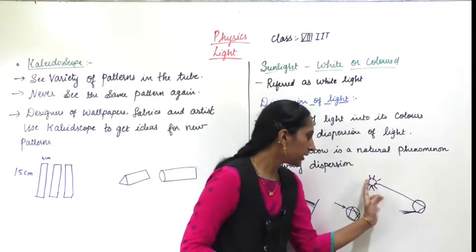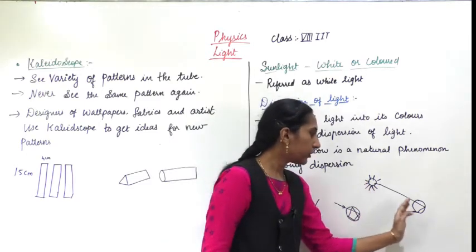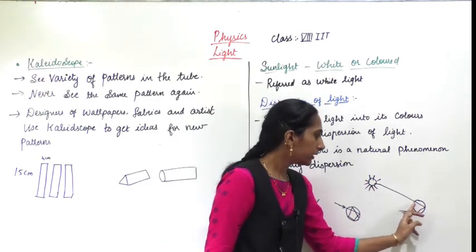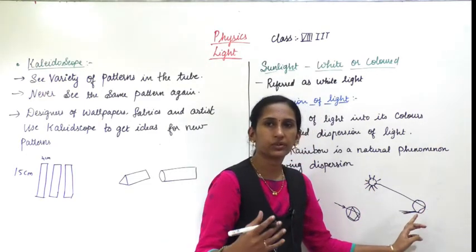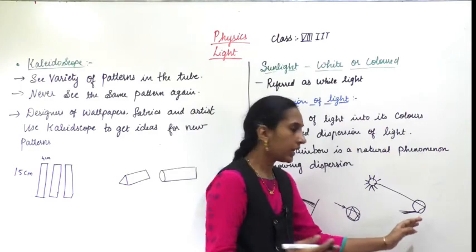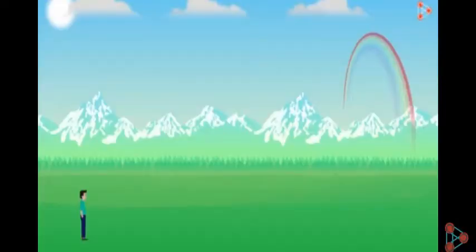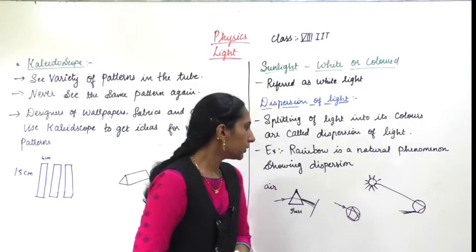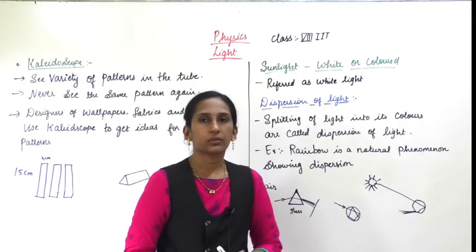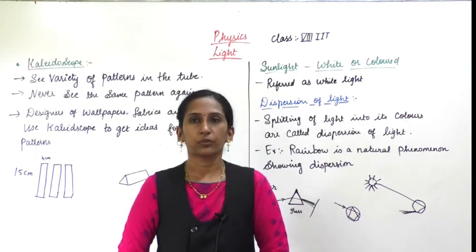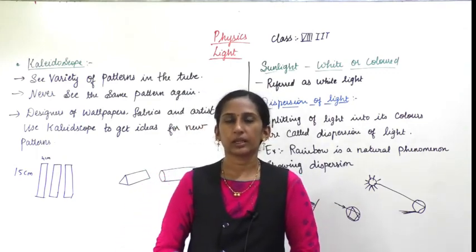Similarly, when the sunlight falls on the rain droplet, total internal reflection takes place, and after that it gives out the seven bright colors which you can see as a rainbow. So this was our today's topic. If you have any doubt you can ask me. Thank you.